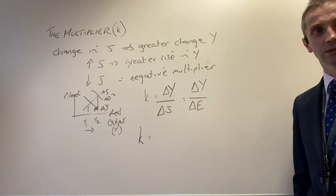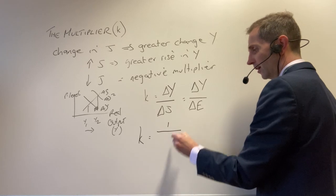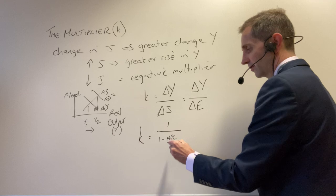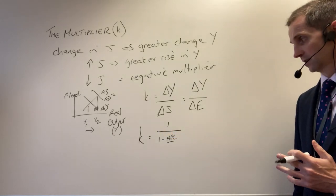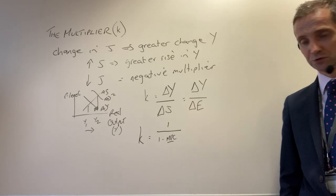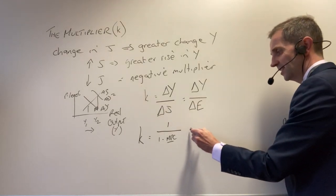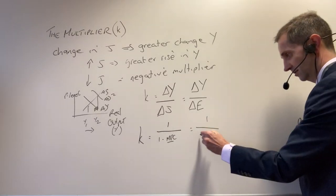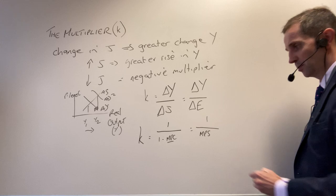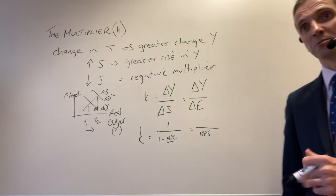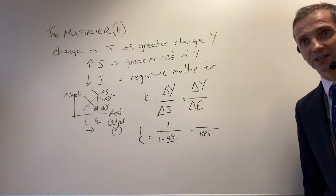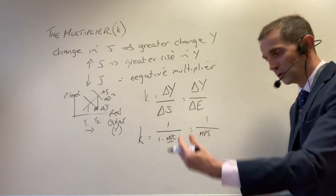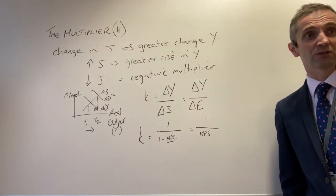K equals 1 over 1 minus MPC — the marginal propensity to consume. That is the same as 1 over MPS, the marginal propensity to save, because in our closed economy we assume that we either consume or we save. So 1 minus MPC is just the same as 1 over MPS. And then in the broader open economy, where we've got imports, taxation, and savings, one way of saying it would be 1 over those grouped together — savings, tax, and imports — which are called withdrawals.